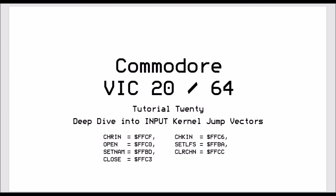The internal jump vectors we're going to be working with are the CHRIN jump vector, the OPEN jump vector, SET NAME, CLOSE, CHANNEL IN, SET LOGICAL FILE SYSTEM, and CLEAR CHANNEL.